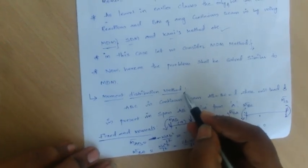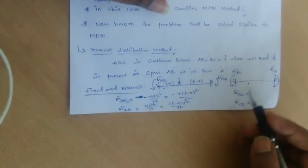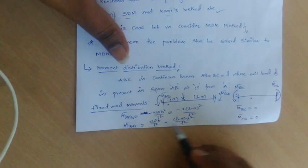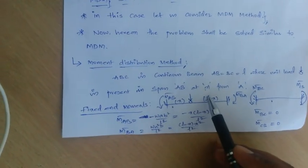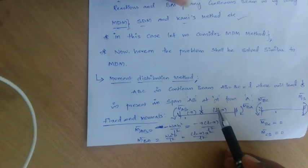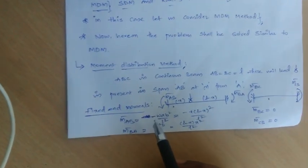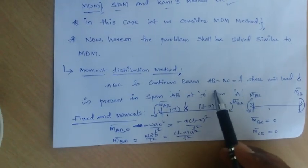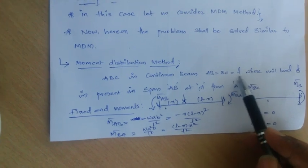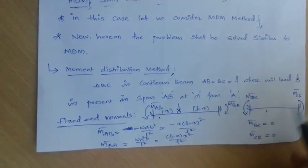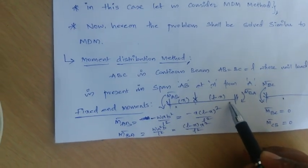The first part of the moment distribution method deals with solving the fixed-end moments and then with distribution factors. For continuous beam A-B-C, where spans AB and BC are both equal to L, the unit load is at distance X from support A and L minus X from support B.